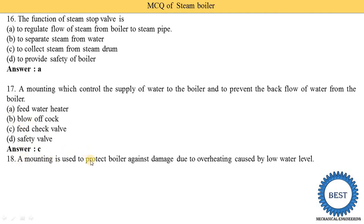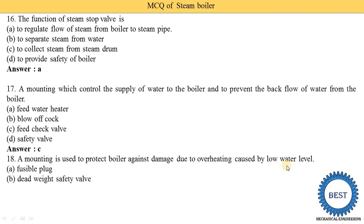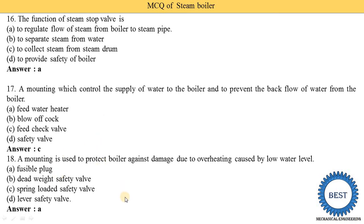Which mounting is used to protect the boiler against damage due to overheating caused by low water level? Option A — fusible plug — is the correct answer. When heating increases, the fusible plug melts, water is supplied to the furnace, and the fire is stopped, thereby avoiding overheating of the boiler.